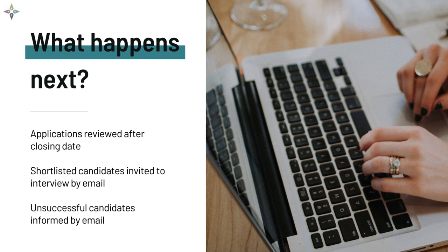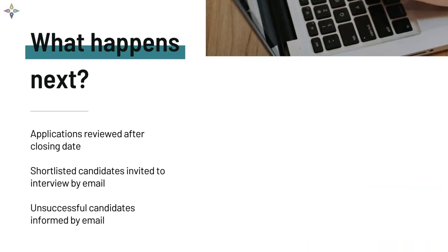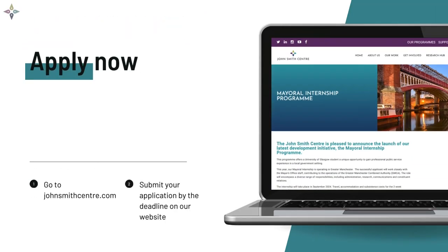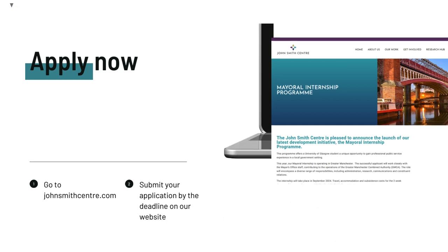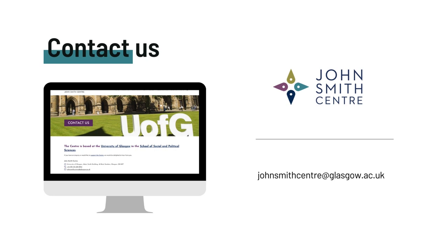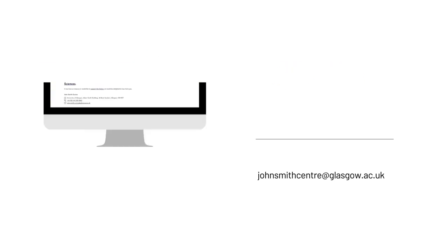Once you've submitted your application, following the closing date the team at the John Smith Centre will review your application and make a decision on whether to shortlist you for an interview. Watch our video on the interview process to find out what to expect if you're invited for an interview. If you are successfully shortlisted, we will be in touch by email to provide you with details of the interview. If your application is not shortlisted, you'll be informed by email. So what are you waiting for? Head over to our website at johnsmithcenter.com to apply. Good luck, and if you have any questions about the online application process, please get in touch.